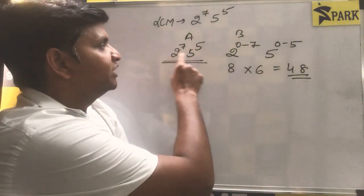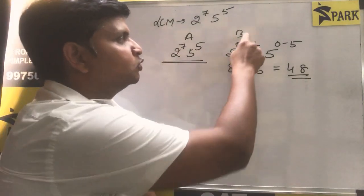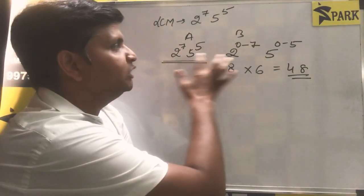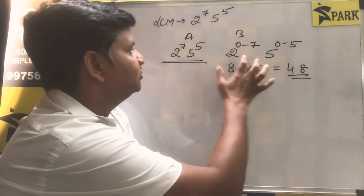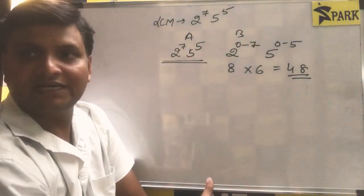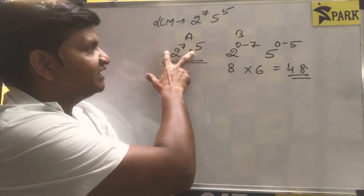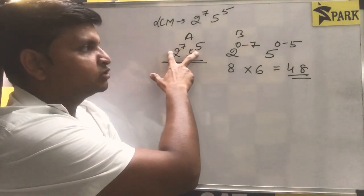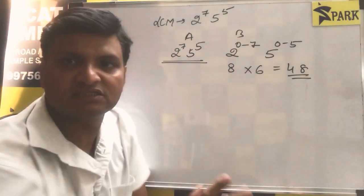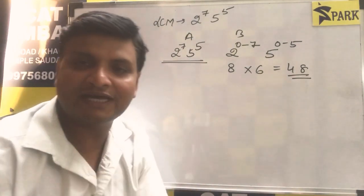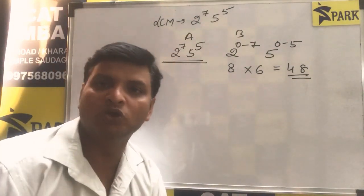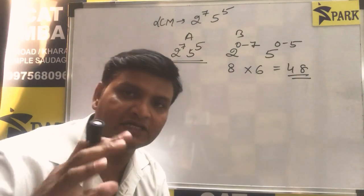For example, A = 2 raised to 7, 5 raised to 5, and B = 2 raised to 1, 5 raised to 1. So A becomes the LCM, and there are 48 such cases where the value of A is 2 raised to 7, 5 raised to 5, and B can be anything among those 48 cases. In all these 48 cases, the LCM is going to be 2 raised to 7 and 5 raised to 5.